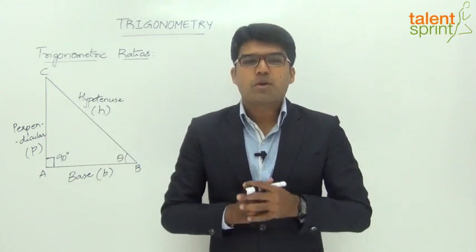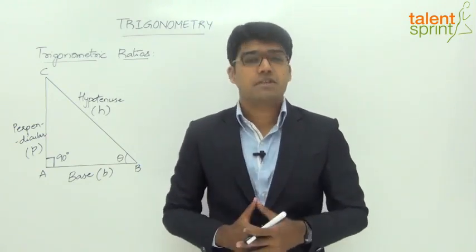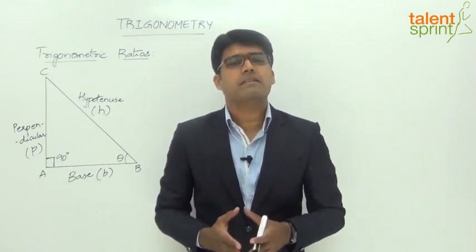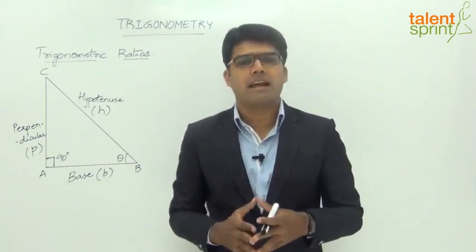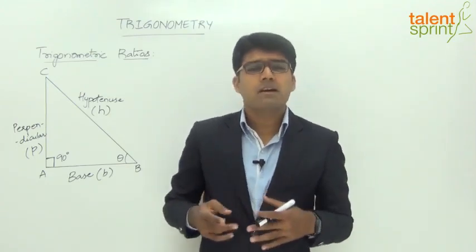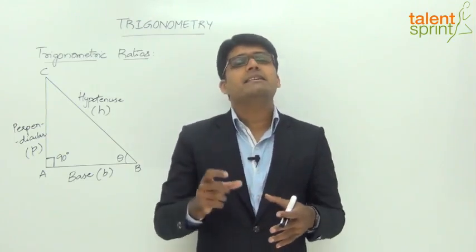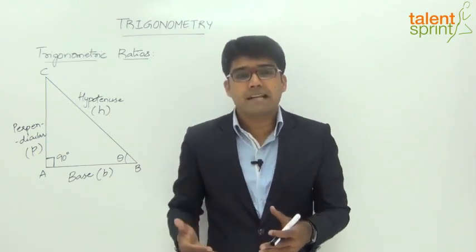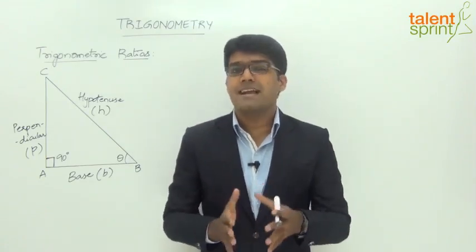Let us now look at the most important part of this topic — that is trigonometric ratios. Trigonometric ratios are simply the ratio of different sides of a right angle triangle with respect to the acute angle. We simply consider two of the sides of a right angle triangle and get the ratio between them, and based on the different sides we consider, we get different types of trigonometric ratios.